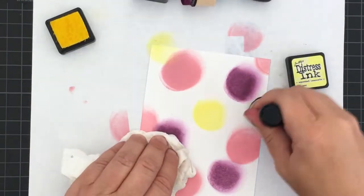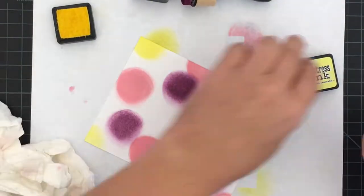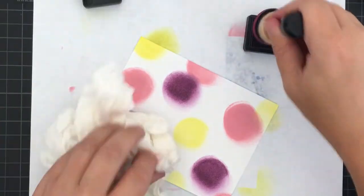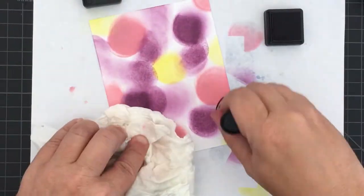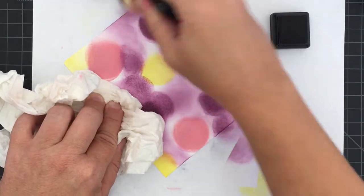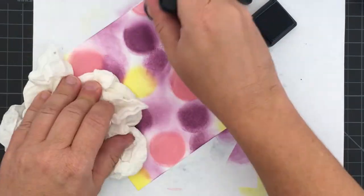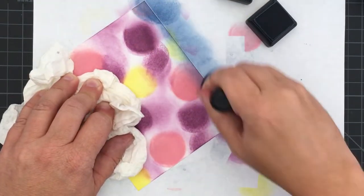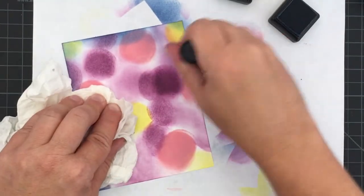First I'm going to use my distress ink. I'm using a four and a quarter by five and a half inch piece of Neenah Solar White. To start off, the colors I'm using of the Distress Inks are Seedless Preserves, Worn Lipstick, Squeezed Lemonade, and then once I've got a whole bunch of that on there I'm going to switch over to some Faded Jeans.